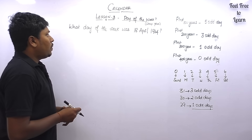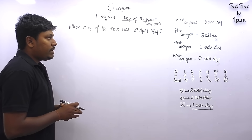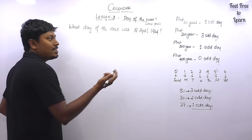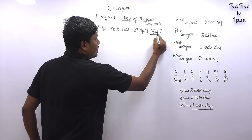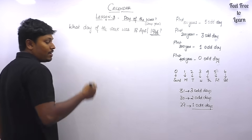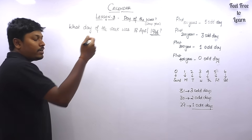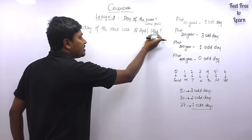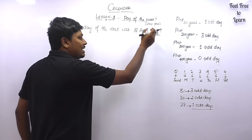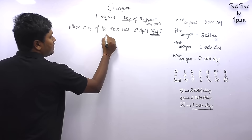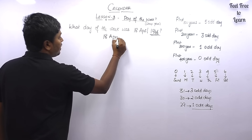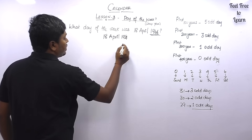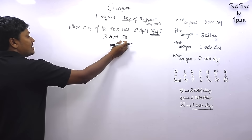Question 2: What day of the week was 18th April 1964? First, check whether it is a leap year. Divide the last 2 digits by 4: 64 ÷ 4 is exactly divisible. So 1964 is a leap year. We split 18th April 1964 as: first 1600 years, then another 300 years giving 1900, and the remaining 64 years.